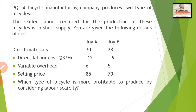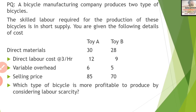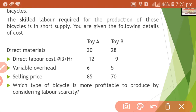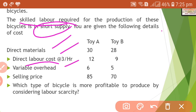This is a homework question for you. A bicycle manufacturing company produces two types of bicycles. The skilled labor required for the production of these bicycles is in short supply — so labor is the key factor. You are given the following details: direct material, direct labor, variable overhead, and selling price. Which type of bicycle is more profitable to produce, considering labor scarcity?